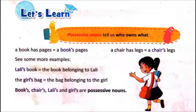Okay children, so let us see what are possessive nouns. Possessive nouns tell us who owns what. Possessive nouns tell us who is or who has. For example, it will be clear to you — Lally's book.